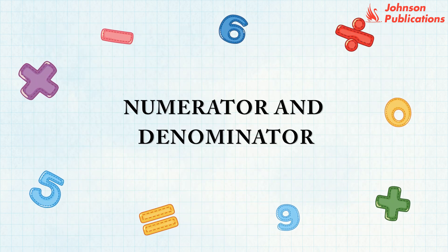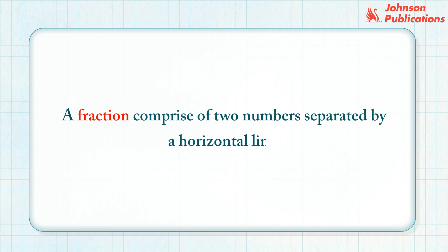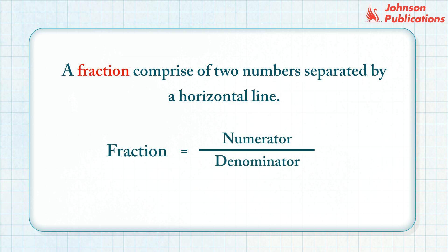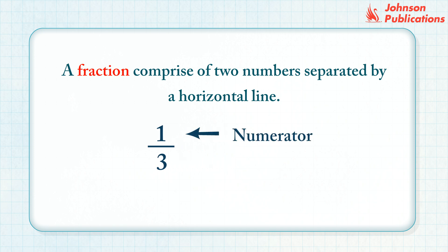Numerator and denominator. A fraction comprises two numbers separated by a horizontal line. The number above the horizontal line is known as the numerator and the number below the horizontal line is known as the denominator. In this fraction, one is the numerator and three is the denominator.